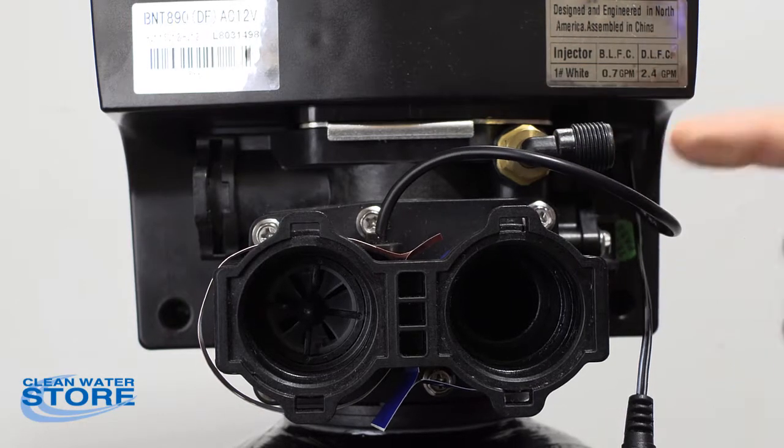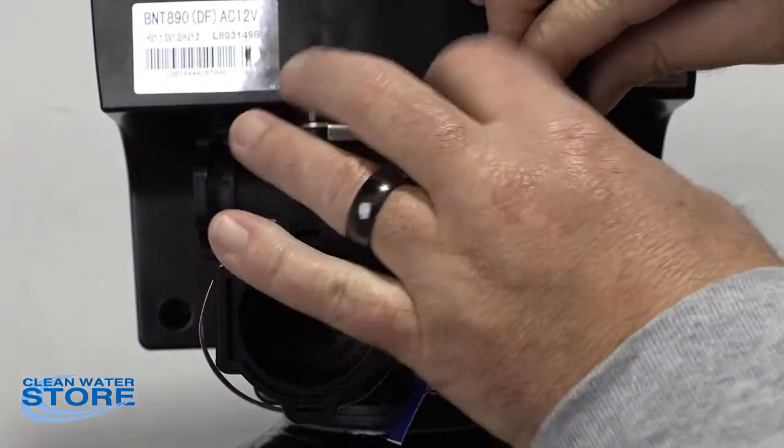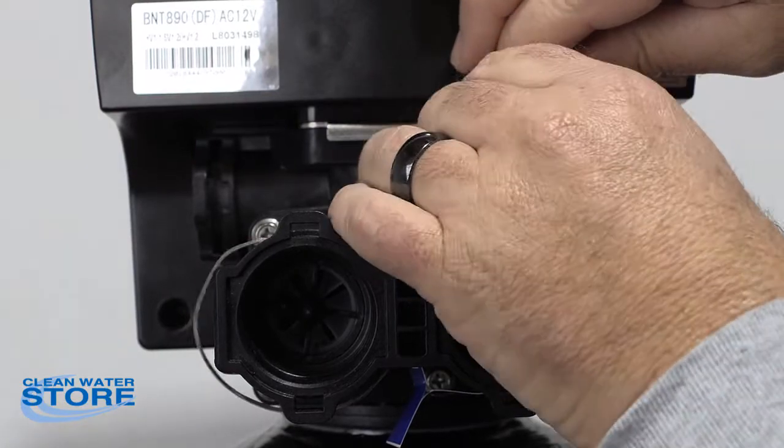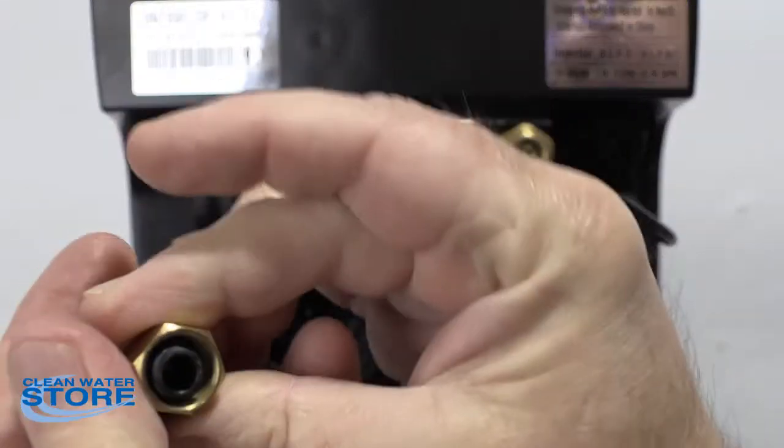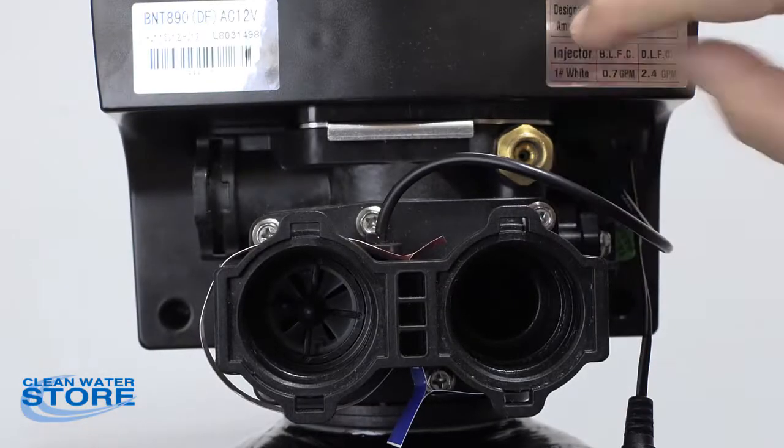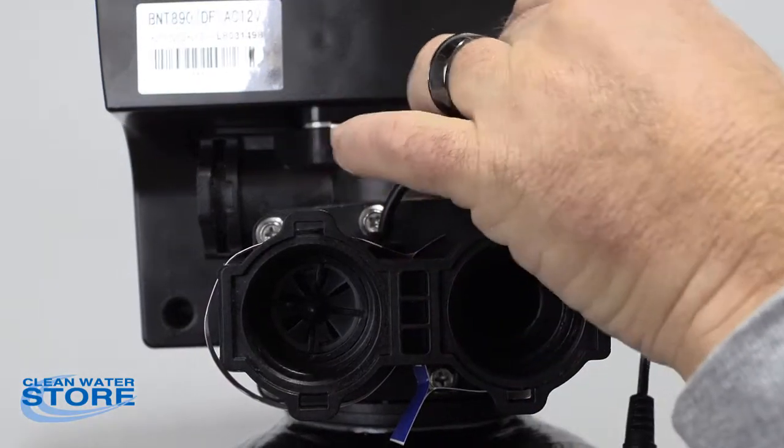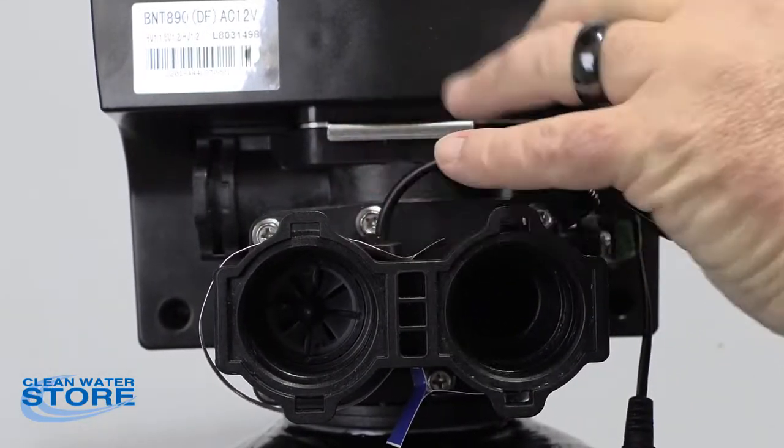Next thing we want to do is actually check this fitting here. This is where your brine line comes into the valve. Go ahead and remove your brine line and look at this end. Make sure there's nothing clogged in there or blocking the flow. You can look up inside of here also. You can remove this if you need to and look up inside of there. Use a paperclip or something to clean that out if you see any debris in there.